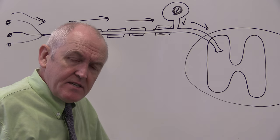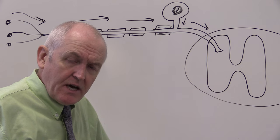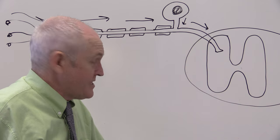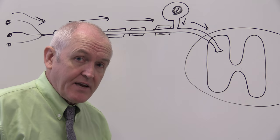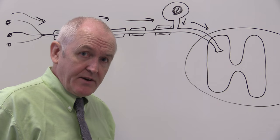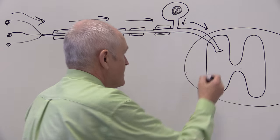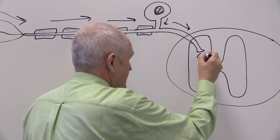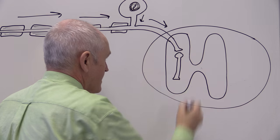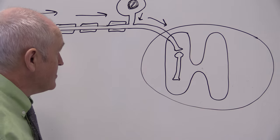Now in some reflexes, the sensory neuron synapses directly with the motor neuron. At other times there's an interneuron or a relay neuron in between. So I'm going to draw a diagram with a relay neuron in between. Here we have a short relay neuron, and that takes the impulse through the gray matter of the spinal cord.